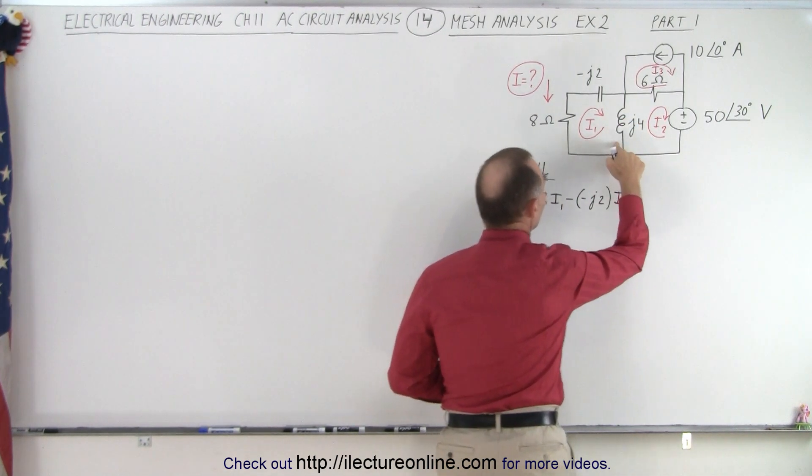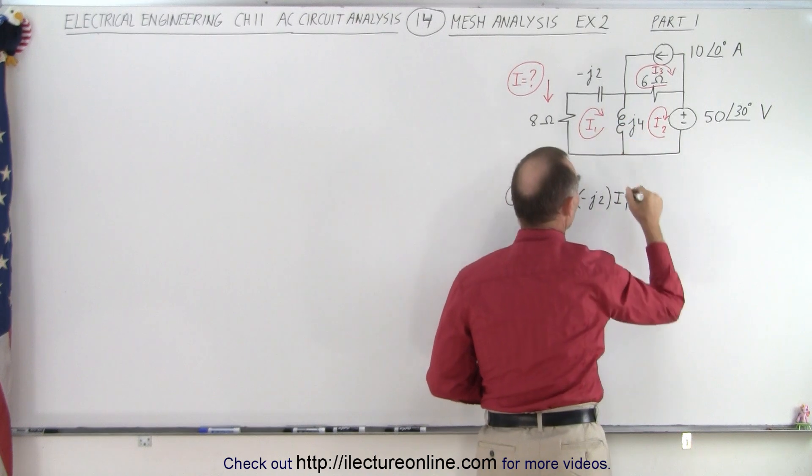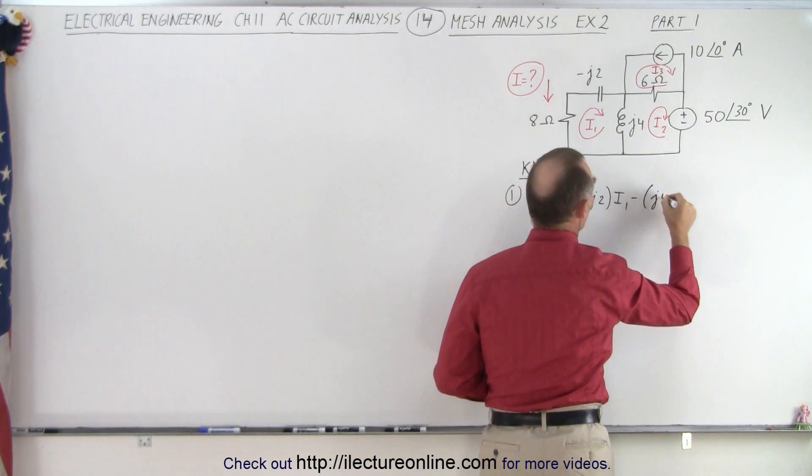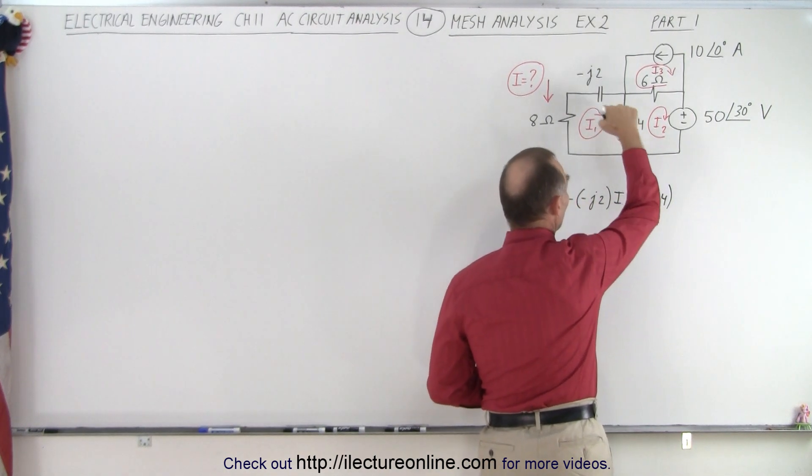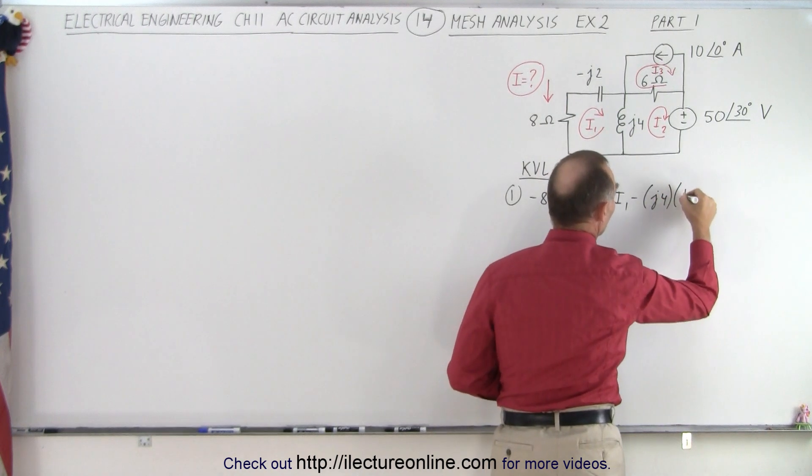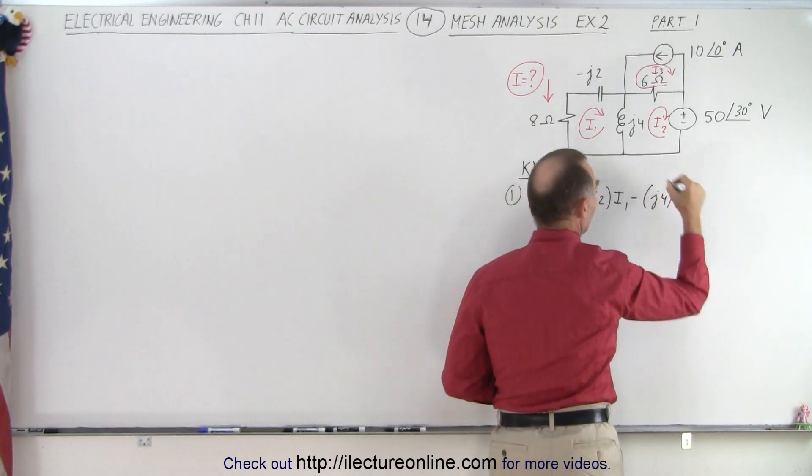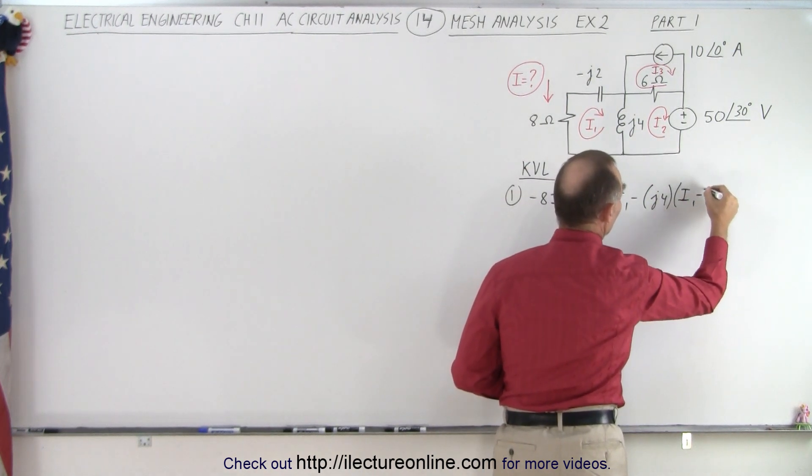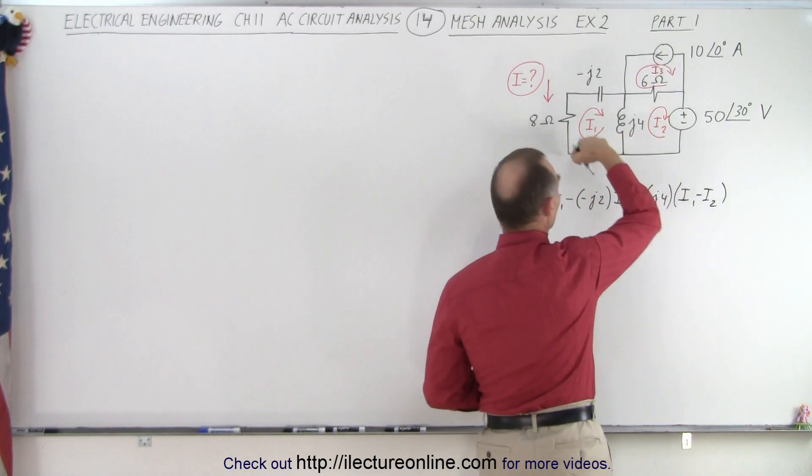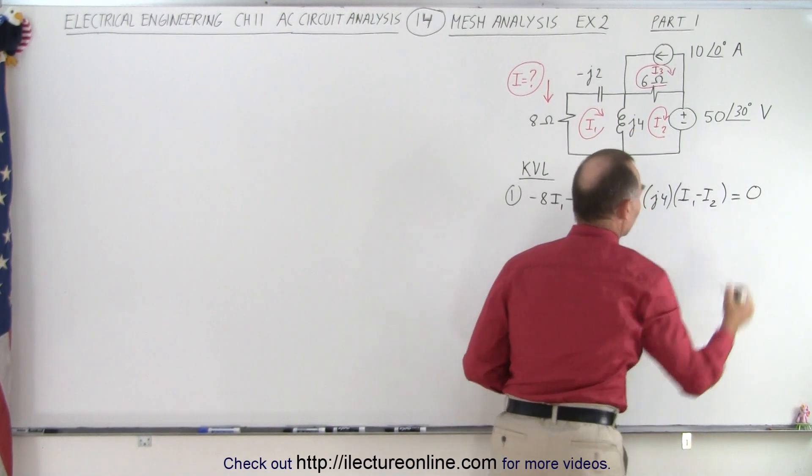And then coming across here we have a voltage drop, so minus J4, and here we go with the current I1, so we have I1, but then we go against the current I2, and so we have to subtract I2, come all the way around, and that adds up to zero.